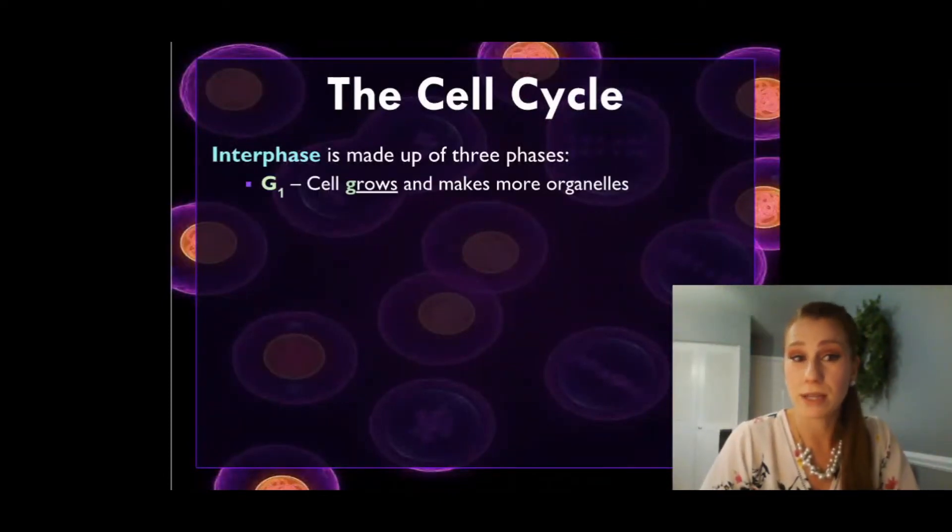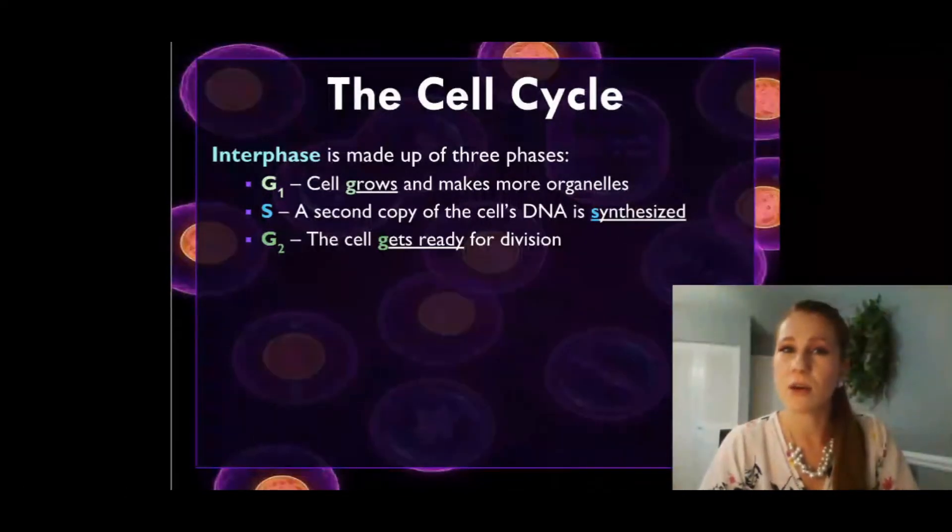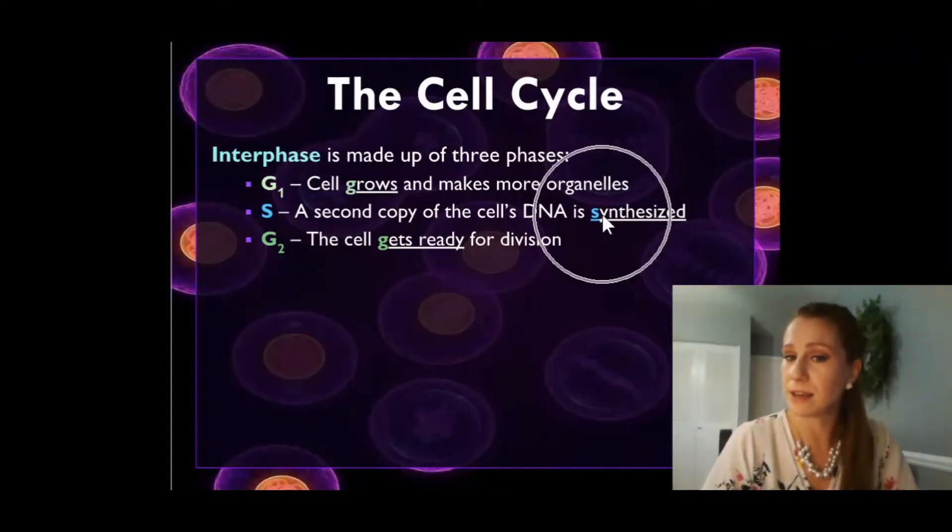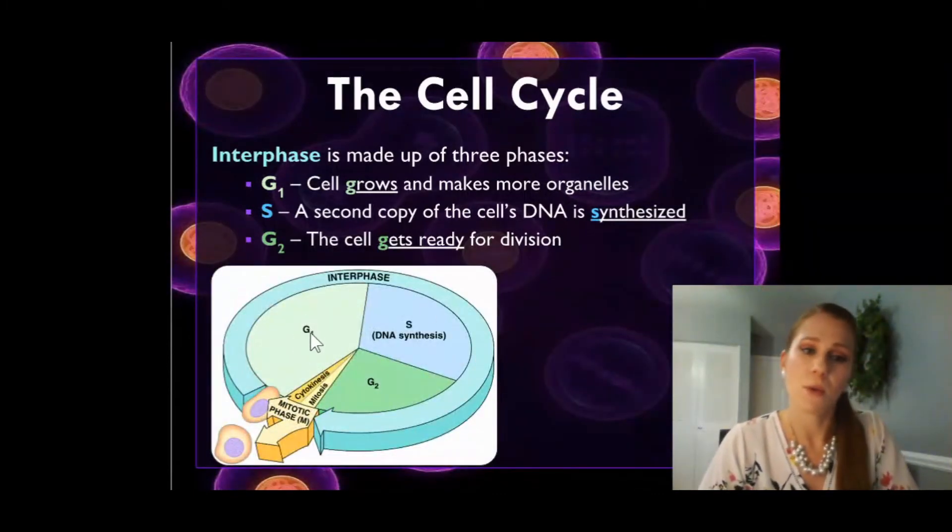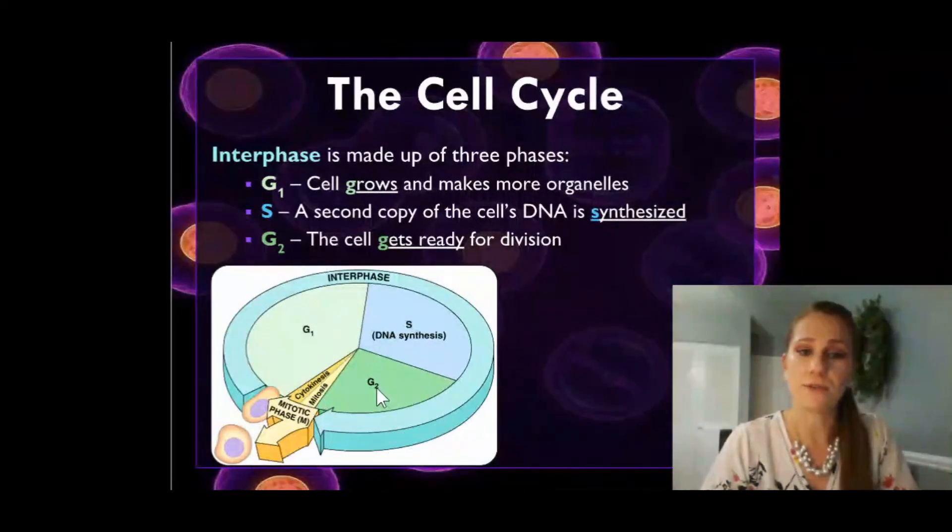Interphase is made up of three different parts. G1 phase, where the cell grows and makes more organelles. S phase, where a second copy of the cell's DNA is synthesized or made. So we're making a second copy of DNA. And then G2 phase. In G2 phase, the cell gets ready for cell division. Those are kind of easy to remember because G1 starts with G, the cell grows. S, you can think of either a second copy or synthesis of DNA. So I usually think of a second copy. That kind of helps me. And then for G2 phase, again, it's growing, but it's mostly just getting ready to divide here. And we see that again on our cell cycle map. We've seen G1 phase, cell grows. S phase, second copy of DNA is made. And then G2 phase, gets ready to divide.